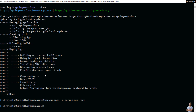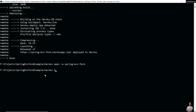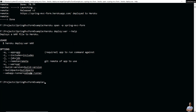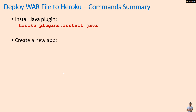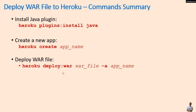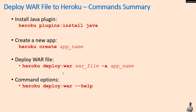If you want to see the options for the deploy WAR command, type 'heroku deploy:war' with the help flag to see the options. You can specify the JDK version and specify the web app runner version, which is the Apache Tomcat version. So far you have learned how to deploy a WAR file to Heroku. The main commands are: install the Java plugin, create a new app, deploy the WAR file, and view the deploy options.